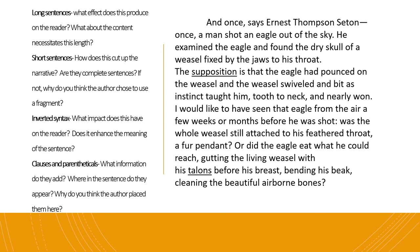Next, I'll read paragraph two aloud. As I do, you should read on your own copy of the text and examine the syntax using the guiding types listed on the left side of my screen. Look for examples of differing sentence lengths, inverted syntax, and any clauses or parentheticals that seem significant. 'And once, says Ernest Thompson Seton, once a man shot an eagle out of the sky. He examined the eagle and found the dry skull of a weasel fixed by the jaws to his throat. The supposition is that the eagle had pounced on the weasel and the weasel swiveled and bit as instinct taught him, tooth to neck, and nearly won. I would have liked to have seen that eagle from the air a few weeks or months before he was shot. Was the whole weasel still attached to his feathered throat, a fur pendant? Or did the eagle eat what he could reach, gutting the living weasel with his talons before his breast, bending his beak, cleaning the beautiful airborne bones?' Review that paragraph and make some notes about the syntax and how it creates meaning and tone.